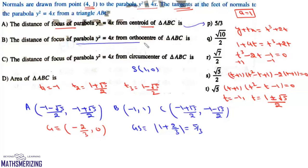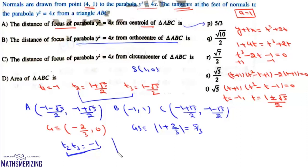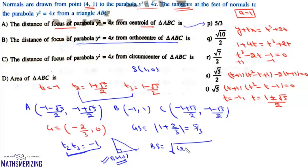For the distance of the focus from the orthocenter of triangle ABC: note that t2·t3 = -1, which means the tangents at t2 and t3 are perpendicular. So triangle ABC is a right-angled triangle, with the right angle at B = (-1, 1). Therefore, the orthocenter is at B = (-1, 1). The distance from the focus (1, 0) to the orthocenter (-1, 1) is √(4 + 1) = √5. So the answer is √5.